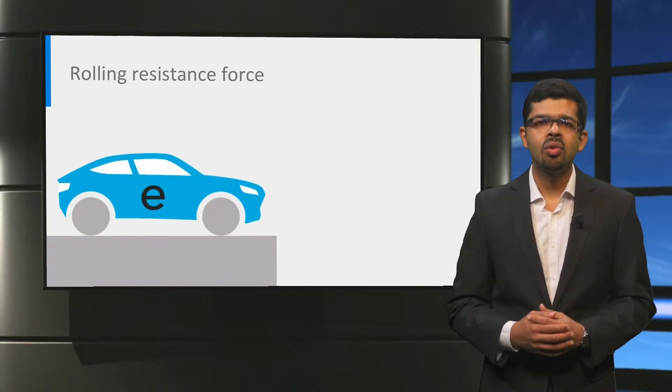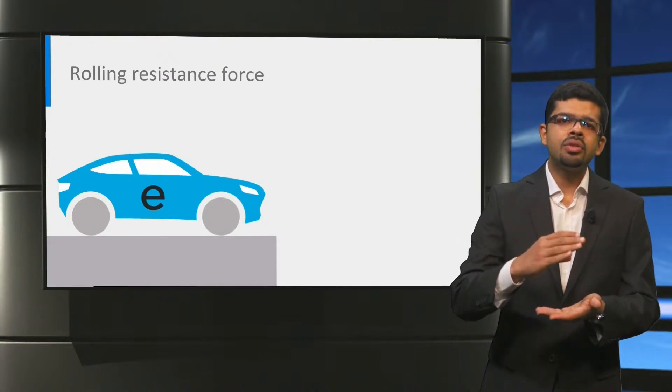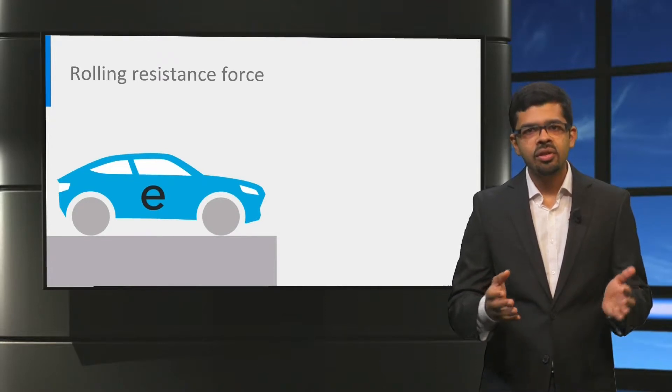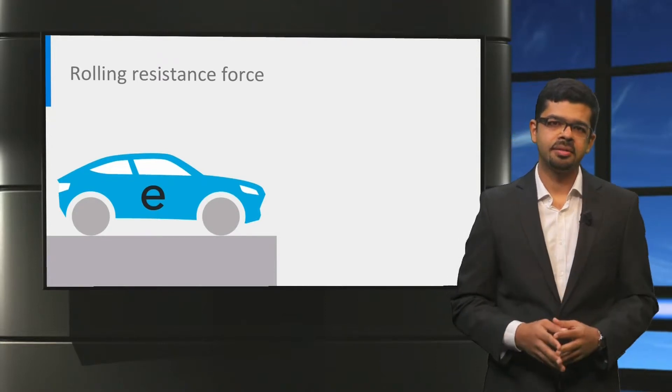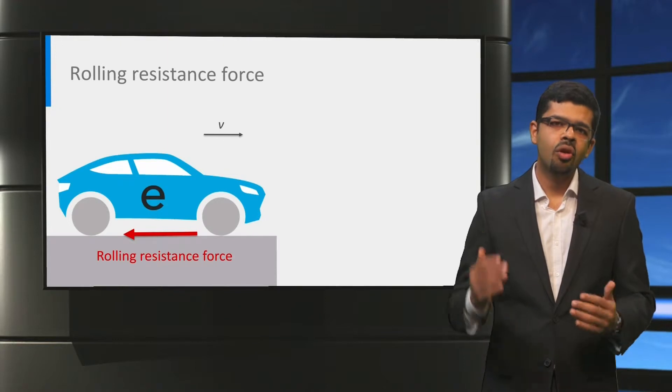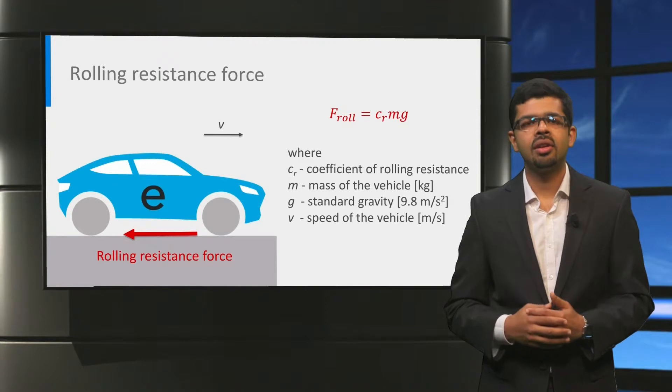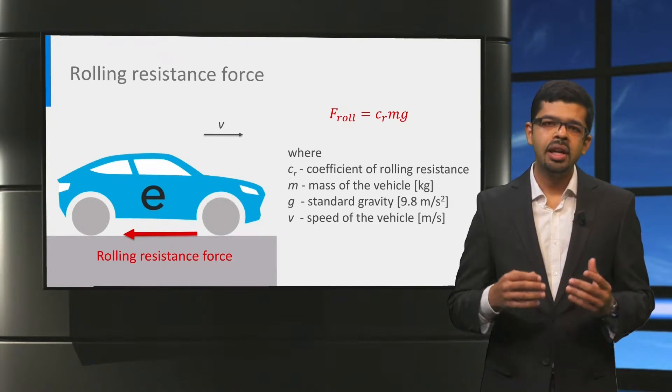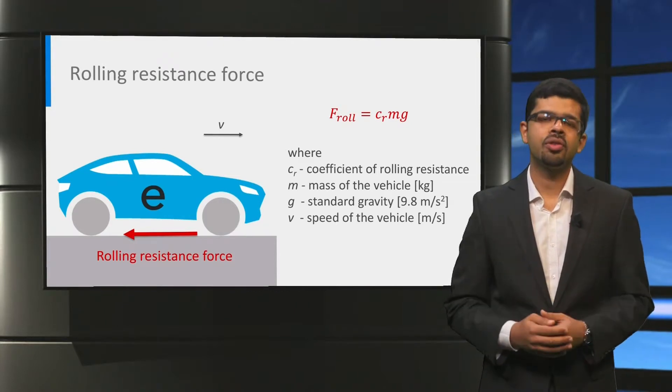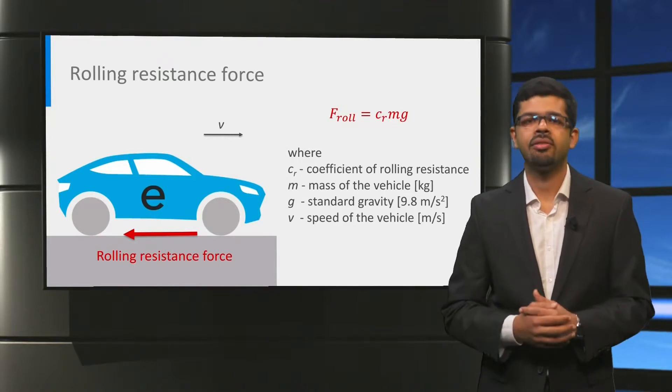Let us first start by analyzing the rolling resistance force. The rolling resistance force occurs due to the friction between the tires and the driving surface. The rolling resistance force is zero at standstill of the vehicle. When the vehicle slowly starts moving, the rolling resistance force acts in the direction opposite to the direction of motion. And it can be calculated by the rolling resistance coefficient, Cr, multiplied by the normal force between the vehicle and the road. For a flat surface, the normal force is the vehicle mass M times the gravity G, or in other words, the weight of the vehicle.